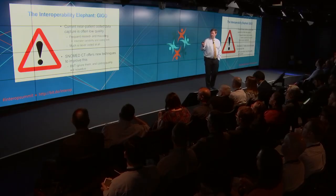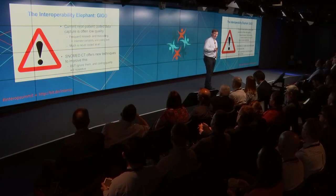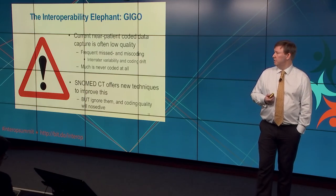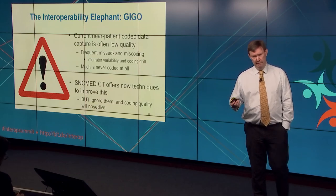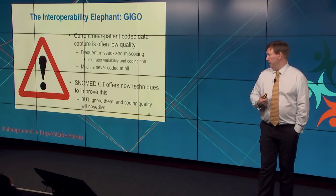But there is, of course, many a catch. The interoperability elephant — one of many — is the old garbage in, garbage out adage. We know that current near-patient coded data, which UK primary care is perhaps the richest example, is often low quality. There is frequent missed and miscoding, picking the wrong codes. In the Read codes, we offer 2,000 or 3,000 codes to record a patient's occupation in primary care, and they are almost never used — with the exception of the codes for midwife, speech therapist, physiotherapist, and a bunch of other actors in the primary care team.